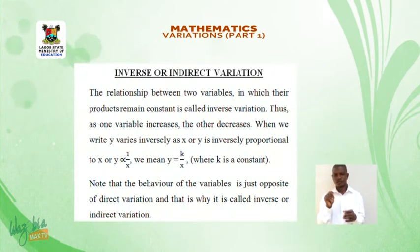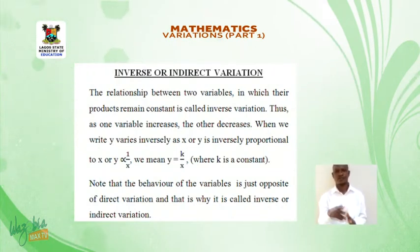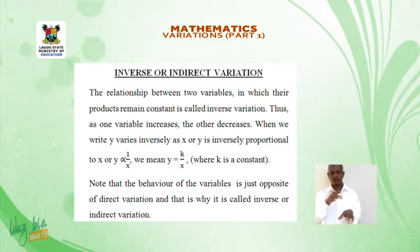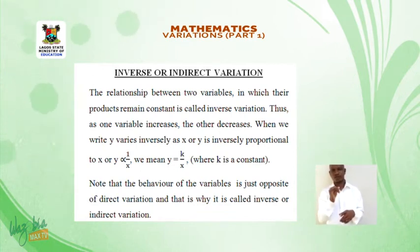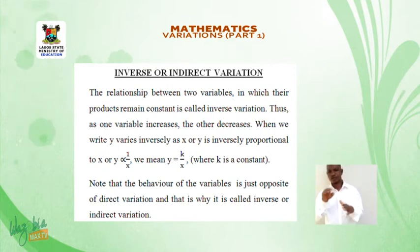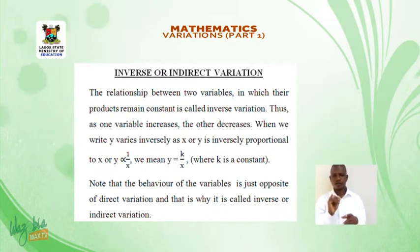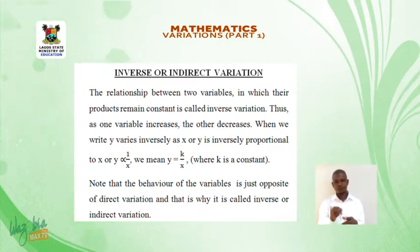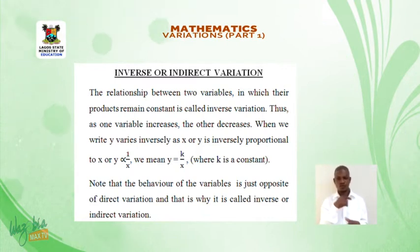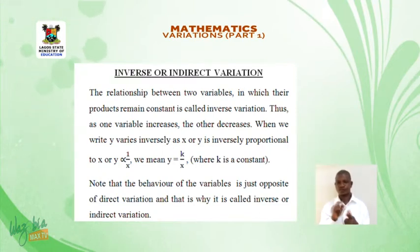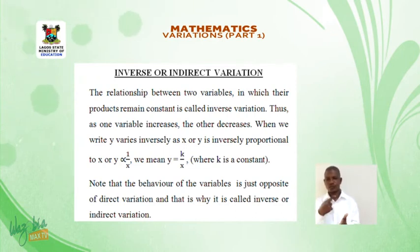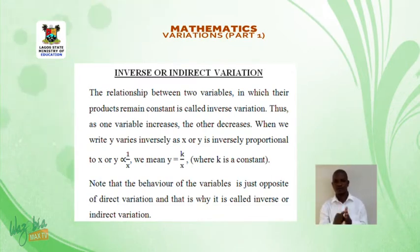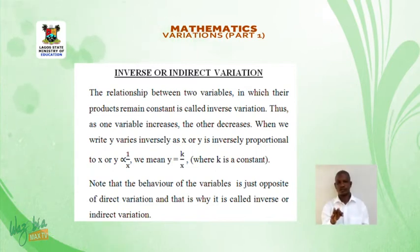Inverse or indirect variation. The relationship between two variables in which their product remains constant is called inverse variation. Thus, as one variable increases, the other decreases. When we write y varies inversely as x, or y is inversely proportional to x, we mean y = k/x, where k is a constant. Note that the behaviour of the variable is just opposite to direct variation, and that is why it is called inverse or indirect variation.